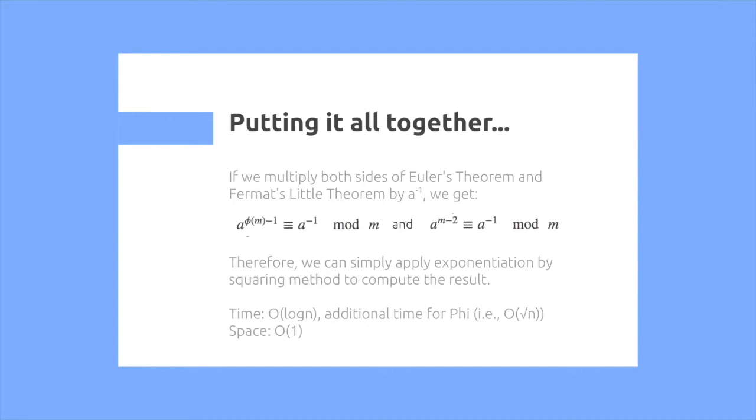So putting it all together, if we multiply both sides of both Euler's theorem and Fermat's little theorem by a to the negative 1, we get that a to the phi of m minus 1 is congruent to a to the power of negative 1 mod m, and a to the power of m minus 2 is congruent to a to the negative 1 mod m.